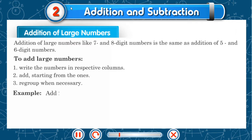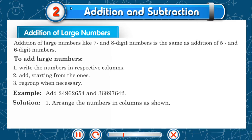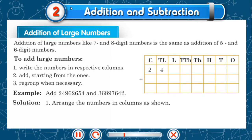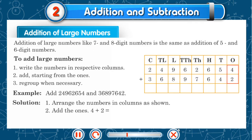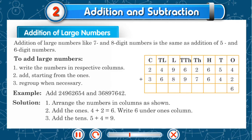Example: add 24,962,654 and 36,897,642. Solution: arrange the numbers in columns as shown. Add the ones — 4 plus 2 is 6. Write under the ones column. Add the tens — 5 plus 4 is 9. Write under the tens column.